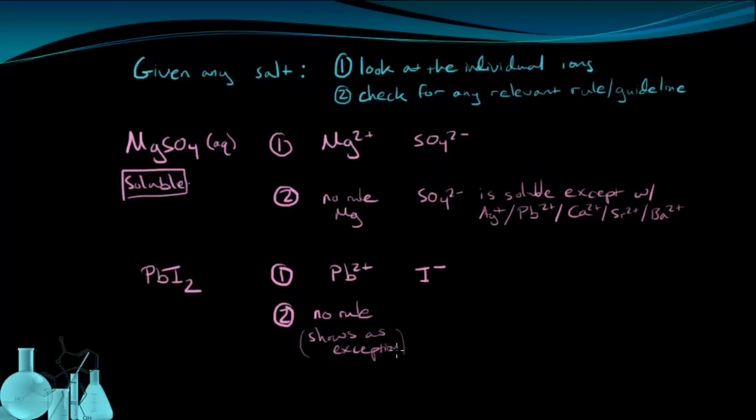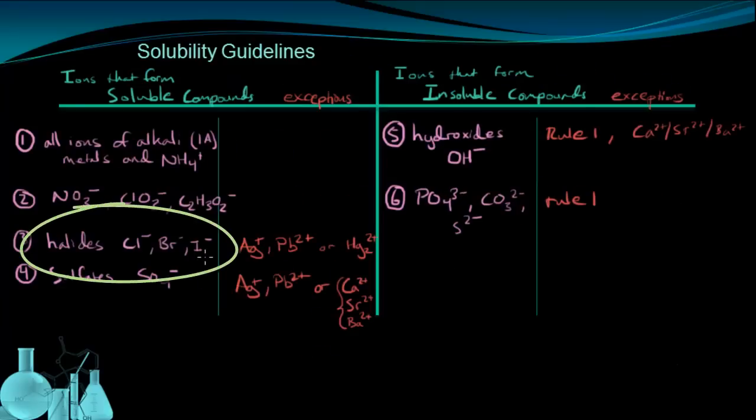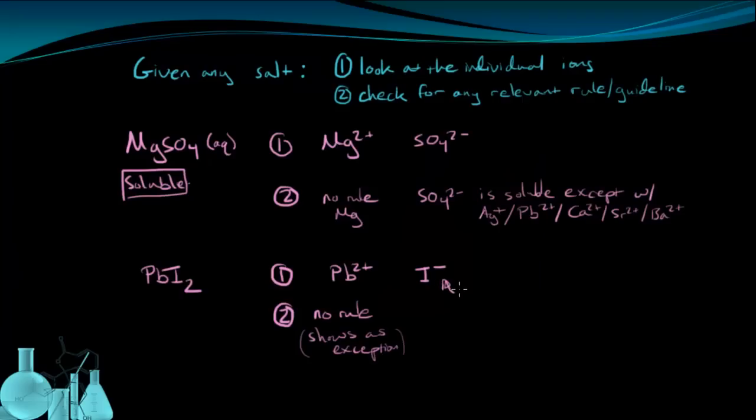But it's good to keep in mind that the lead ion does show up as an exception for some of these solubility rules. So I couldn't find a rule for the lead ion, but I did note that it shows up as an exception for some other rules. Now let's look for the iodide ion. The iodide ion shows up in the halides rule, saying that it is always soluble unless it's combined with the silver, lead, or mercury 1 ions.